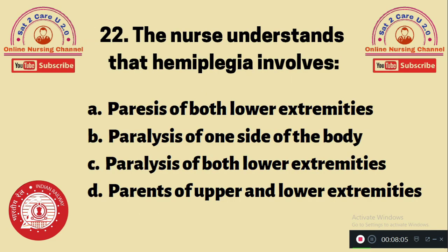Question 22: The nurse understands that hemiplegia involves — A. Paresis of both lower extremities, B. Paralysis of one side of the body, C. Paralysis of both lower extremities, D. Paralysis of upper and lower extremities. The correct answer is B — paralysis of one side of the body is called hemiplegia.